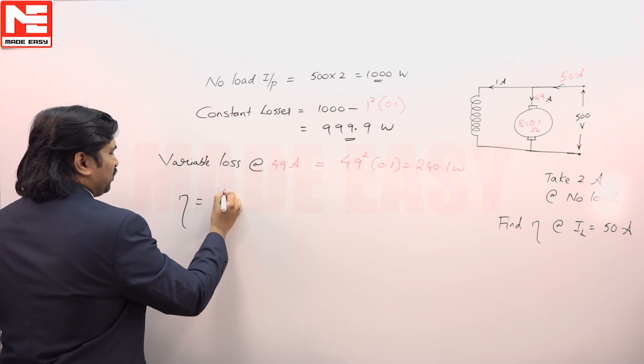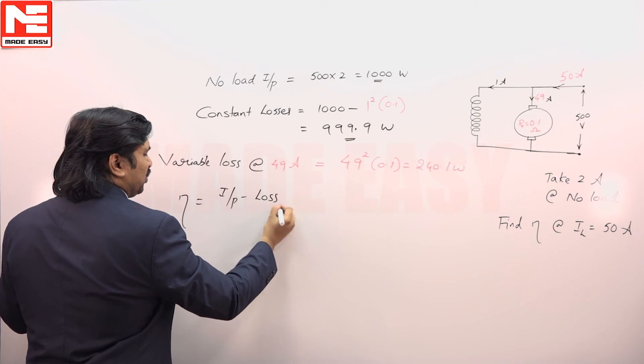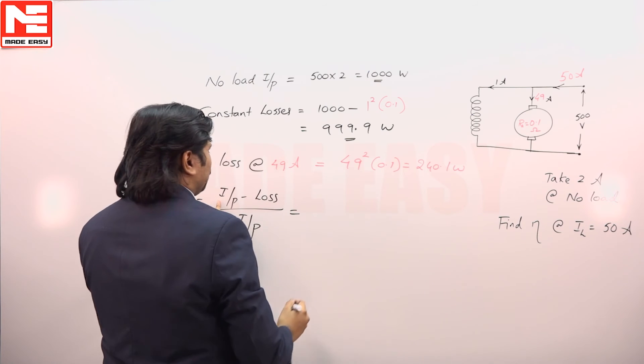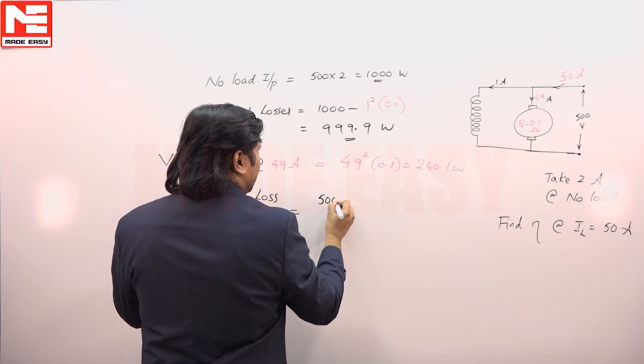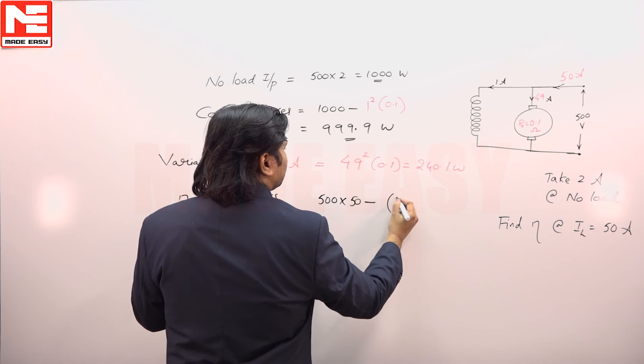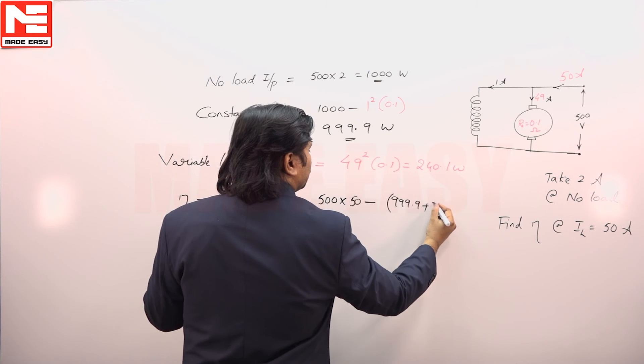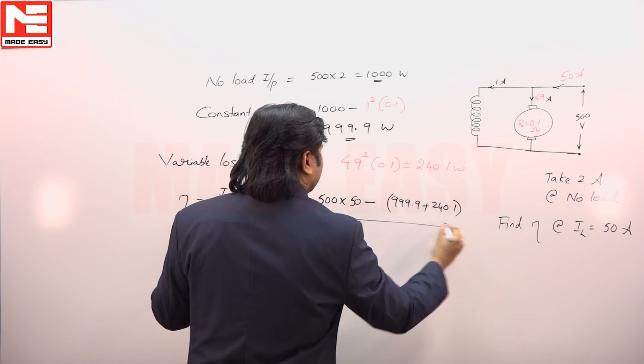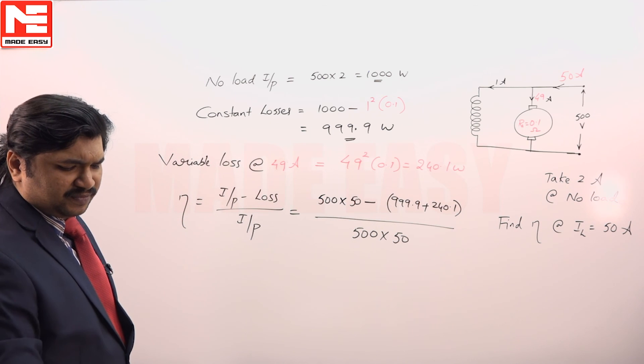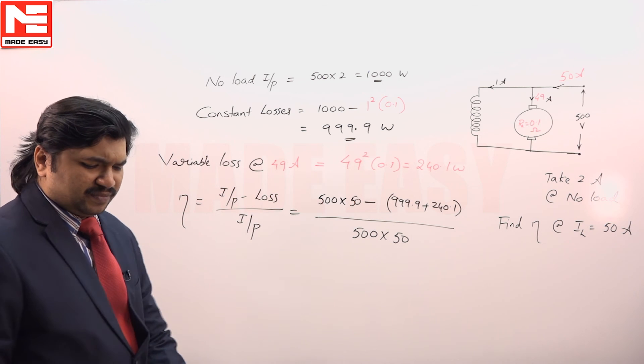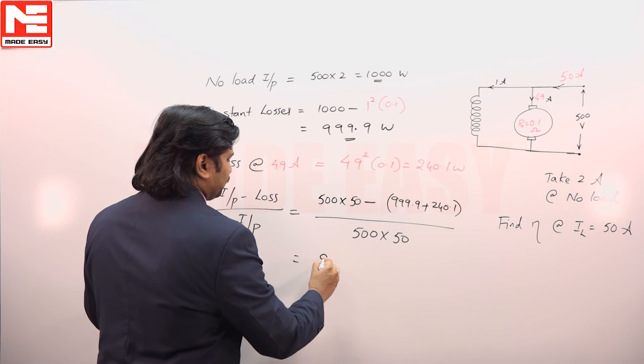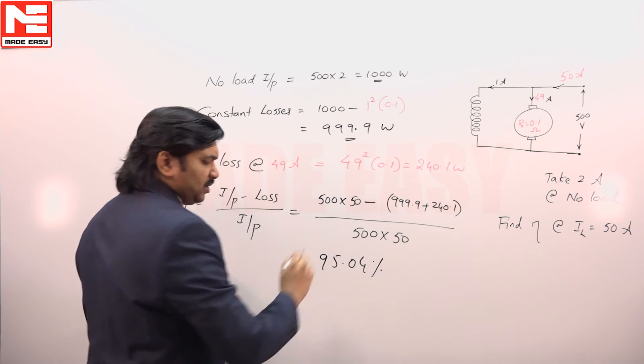Efficiency is equal to input minus loss by input. It is convenient to have a motor because input is V into I L. So, what is input of the motor when it is run 50? 500 into 50 minus, what are the total losses? Constant loss plus variable loss by 500 into 50 A. It is 95 percent.